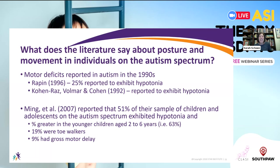The literature reports motor impairments in autism since as early as the 1990s. Rappin in 1996 found 25% of a cohort of children had hypotonia. Kohn-Raz et al. reported a preponderance of hypotonia in individuals with autism. Ming and colleagues in 2007 reported about 51% of their sample of children and adolescents on the spectrum had hypotonia, with a greater percentage in younger children aged two to six years. 19% were toe walkers and 9% had some kind of gross motor delay.